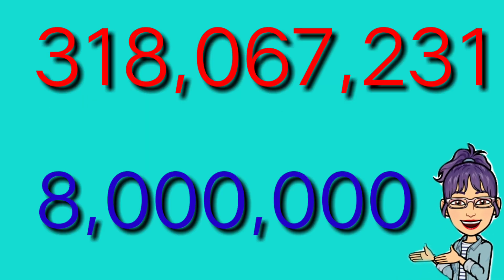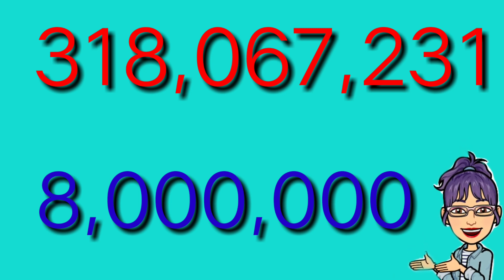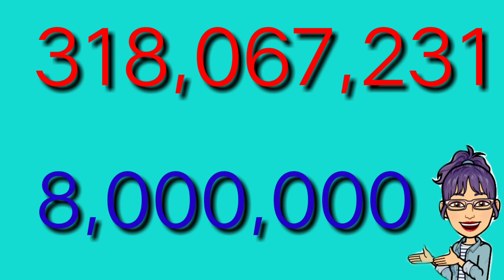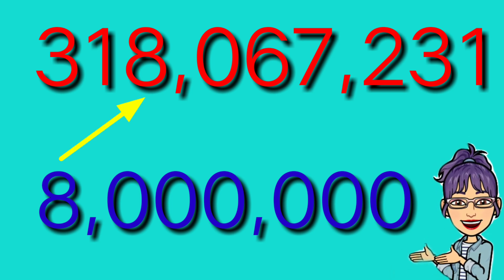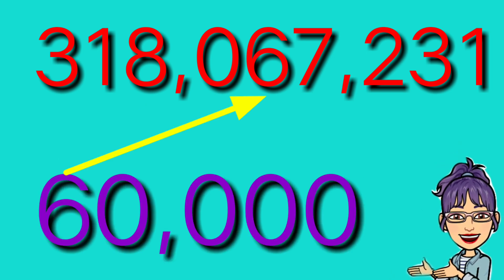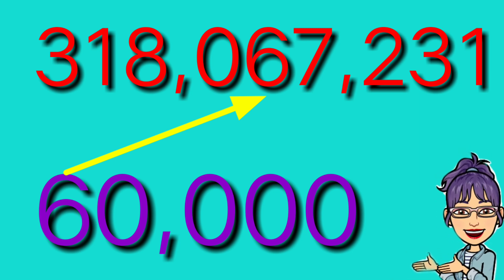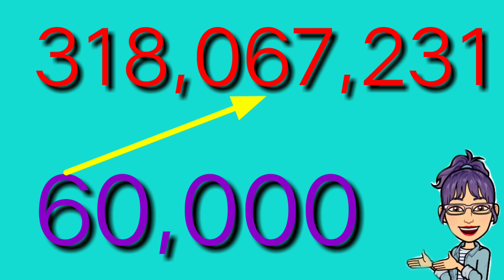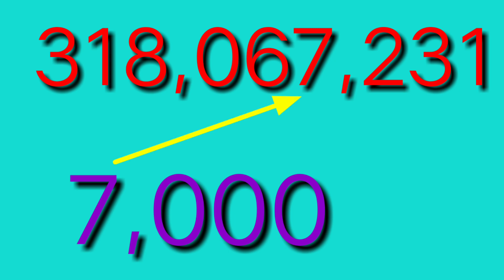Now, given the value, which digit has a value of 8,000,000? It's 8. Which digit has a value of 60,000? It's 6. Which digit has a value of 7,000? It's 7.